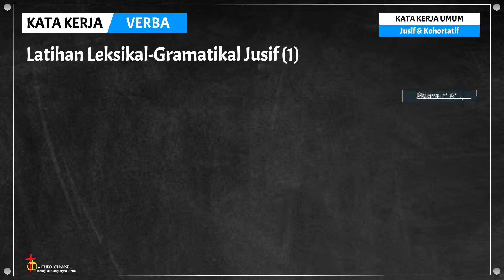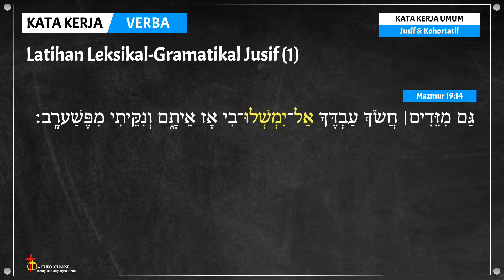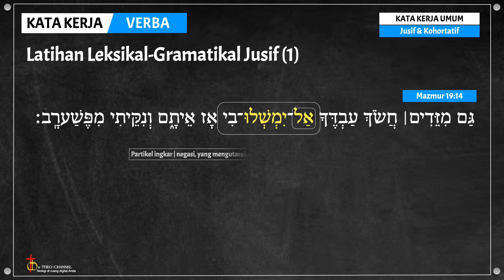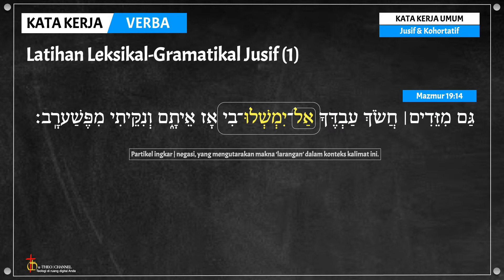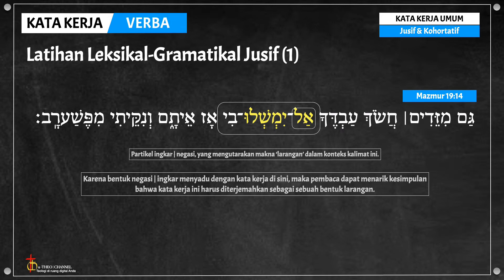Contoh berikutnya adalah kata kerja imperfect dalam bentuk Yusif dengan partikel negasi: Al-Yimselu dari Mazmur 19 ayat 14. Partikel ingkar di sini mengutarakan makna larangan. Bentuk negasi yang menyatu dengan kata kerja memberi kita kesimpulan bahwa kata kerja ini harus diterjemahkan sebagai sebuah bentuk larangan.